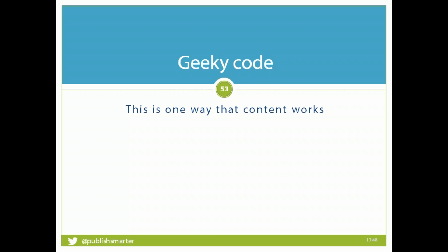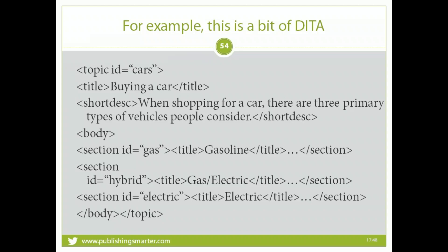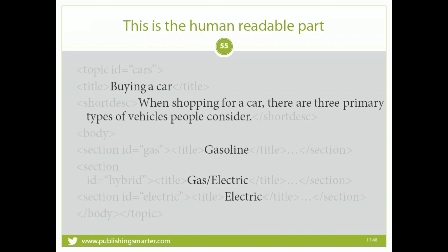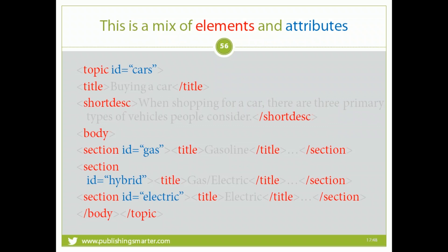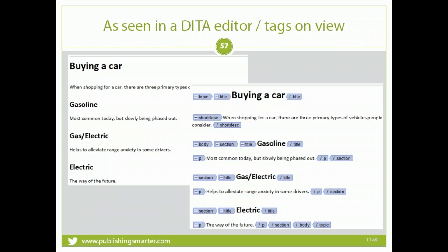Behind the scenes, here's a look at the DITA markup. A small bit of data shows a topic on buying a car: when shopping for a car there are three primary types of vehicles people consider, with sections on gas, gas-electric, and electric. Looking at it structurally, elements are shown in red and attributes in blue. The topic contains a title and short description; the body is made up of three sections, each with a title. The topic and sections have a unique identifier — an ID — which is an attribute. In the editor or tags-on view, this becomes a human-friendly way to read, work with, and identify content, whether you write in raw code or inside an editor like FrameMaker.